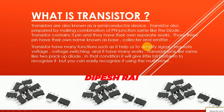Transistors have many functions such as amplifying signals, regulating voltage, voltage switching, and many more. Transistors look similar to two back-to-back diodes, which can make them a little difficult to recognize, but you can easily identify them using a multimeter. I have already uploaded a video on how to use the multimeter — the link is in the video description.